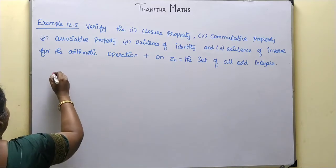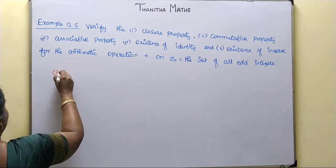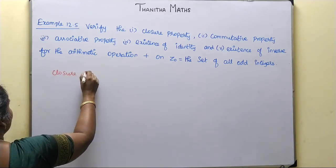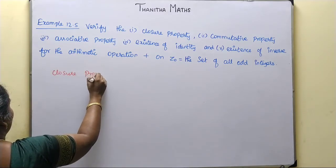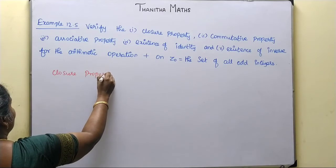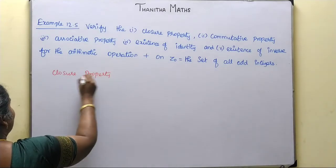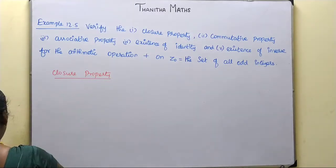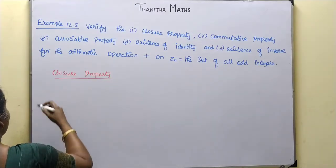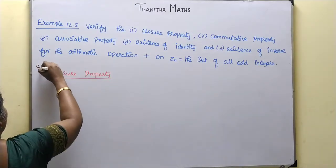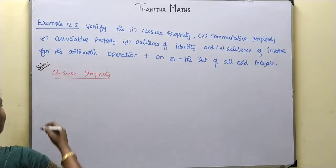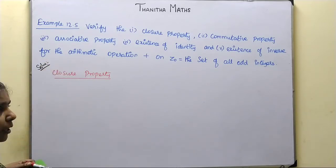First we will check the closure property. The closure property requires that the binary operation is satisfied — that is, the operation must be a binary operation on the set.